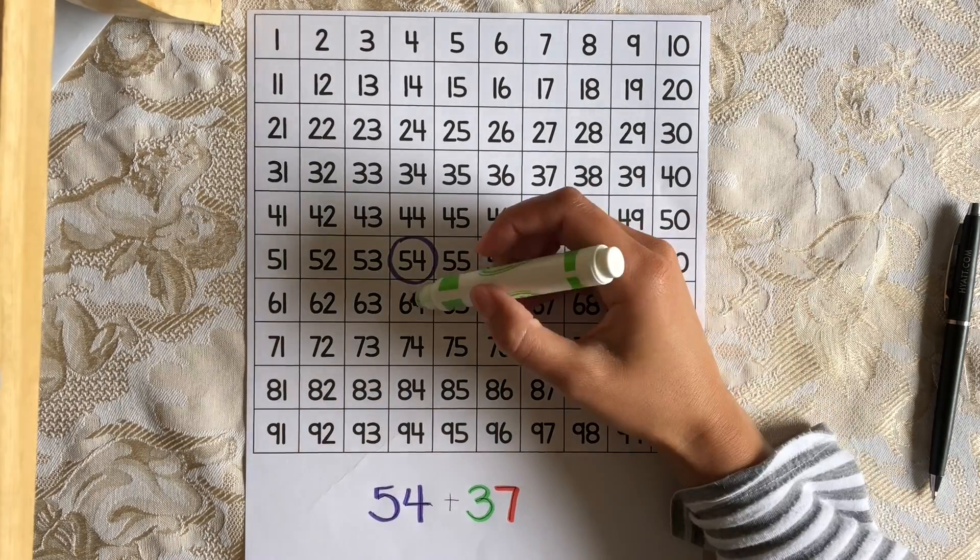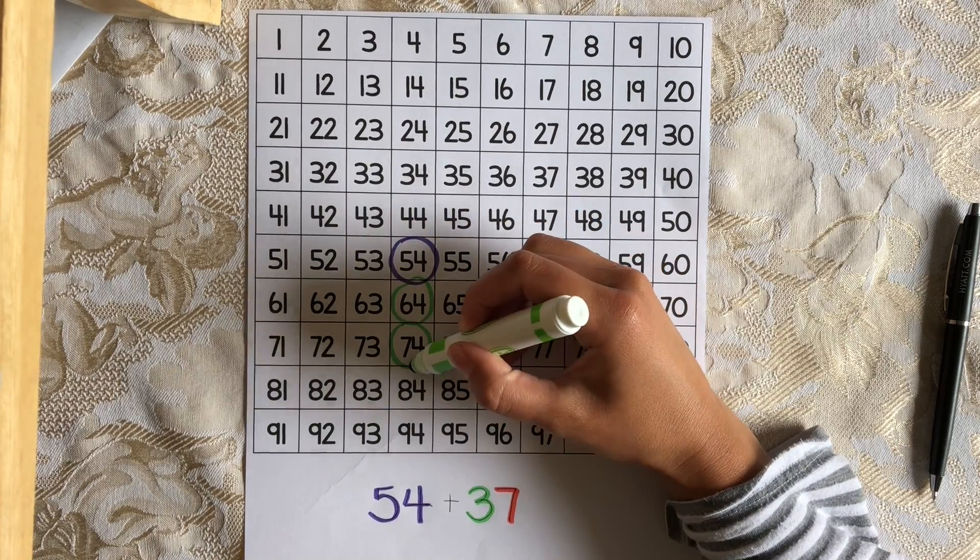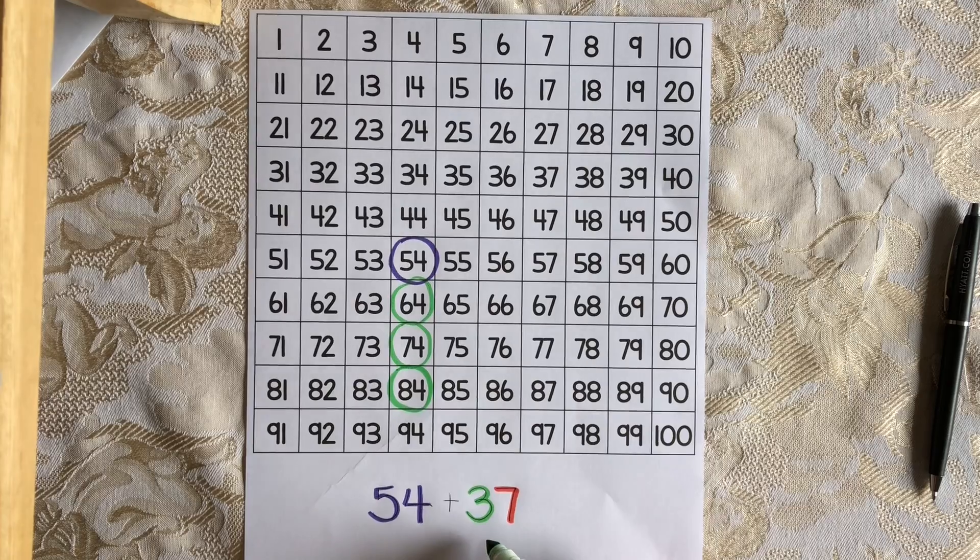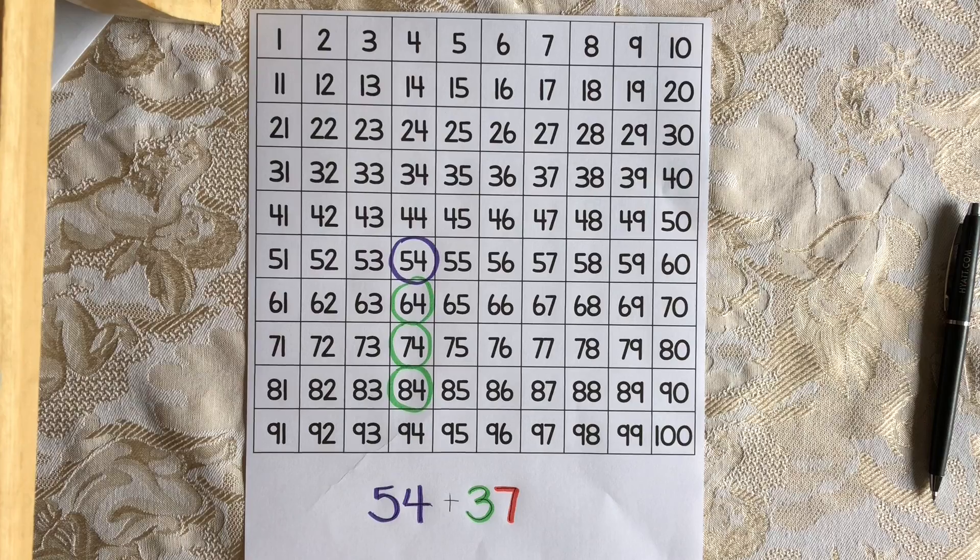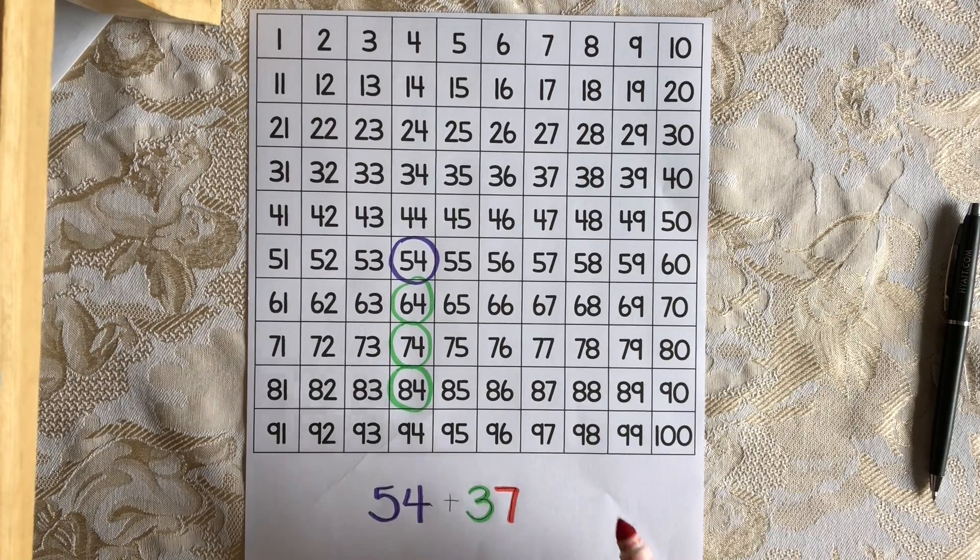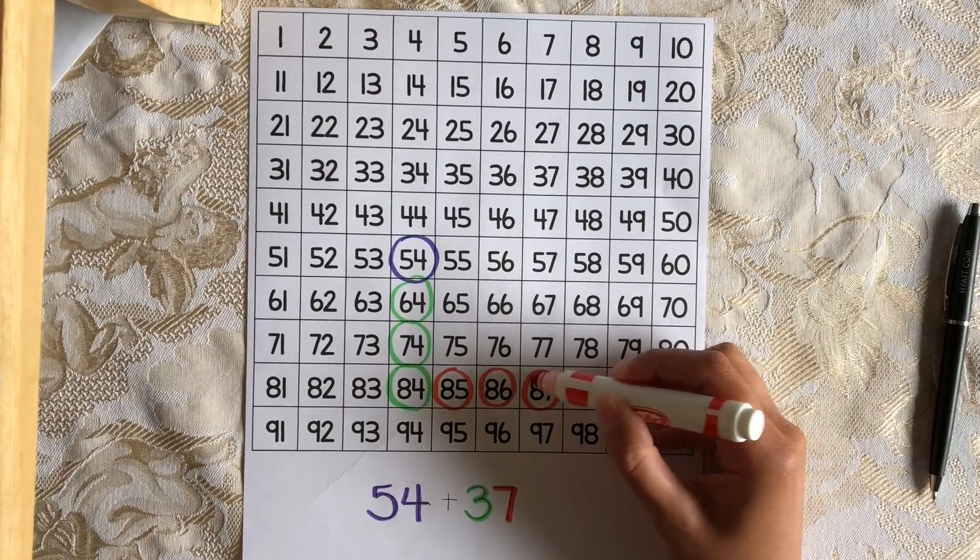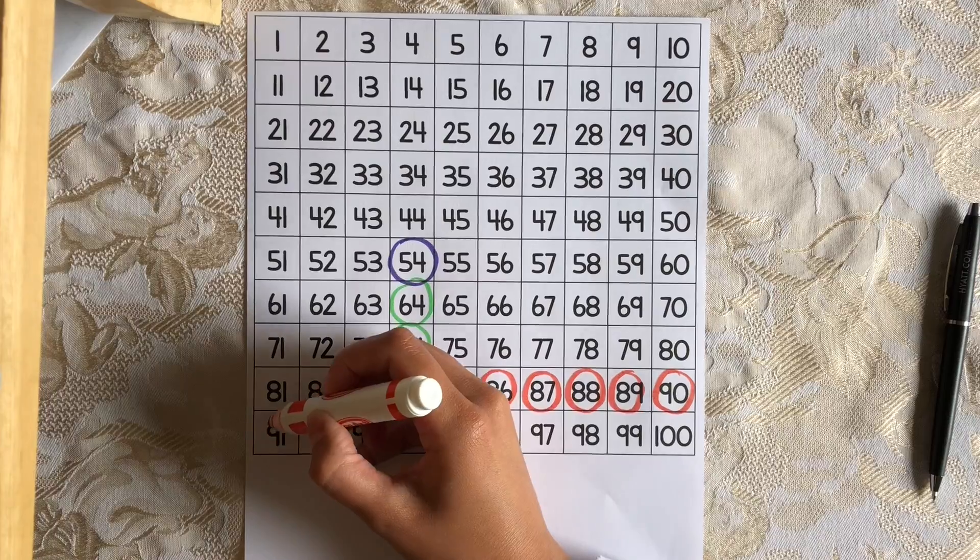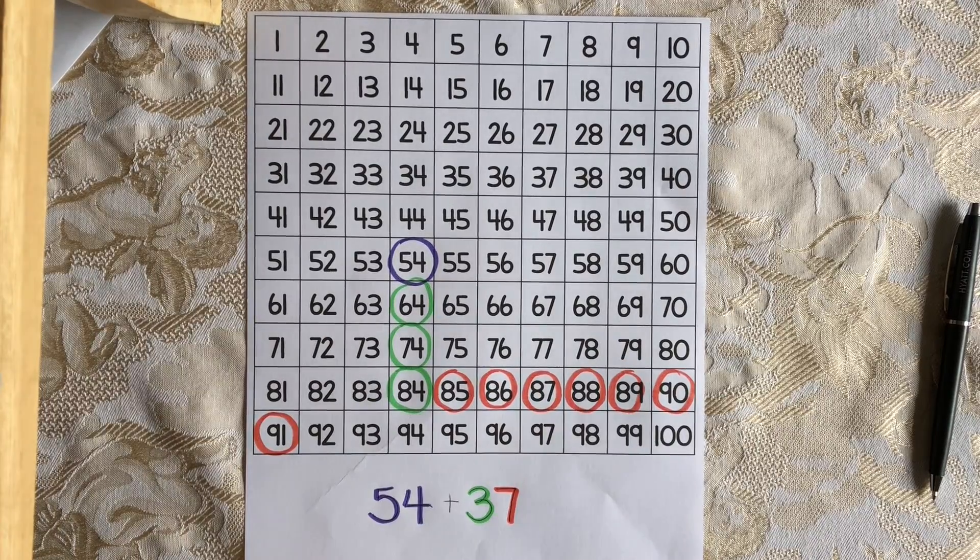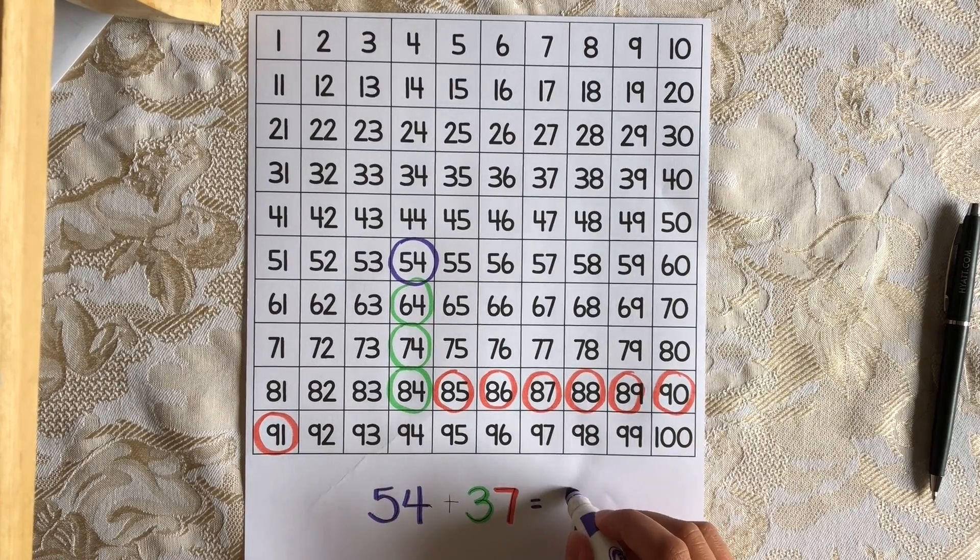So we're going to move down three times. Here's one, two, three, for three tens. And now we're going to move to the right to add ones. And we need to do that seven times. 1, 2, 3, 4, 5, 6, 7. And now I've landed on my sum, which is 91.